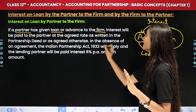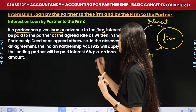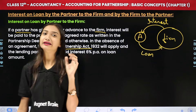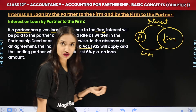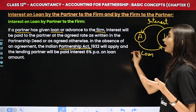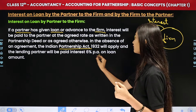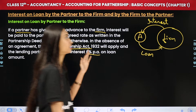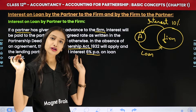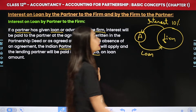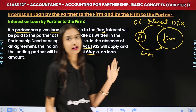Further, in the absence of a partnership deed, the Indian Partnership Act 1932 will apply. If there is no partnership deed or no interest rate decided, you follow the provisions of the Partnership Act. The lending partner will be paid interest at 6% per annum on the loan amount. If the deed already agreed on, say, 10%, then follow that — but if nothing was decided, then 6% per annum is given.